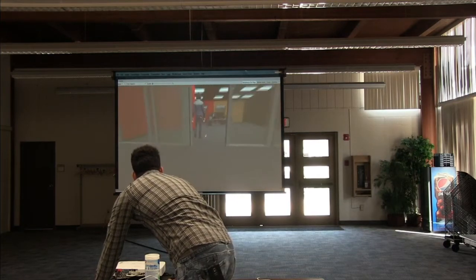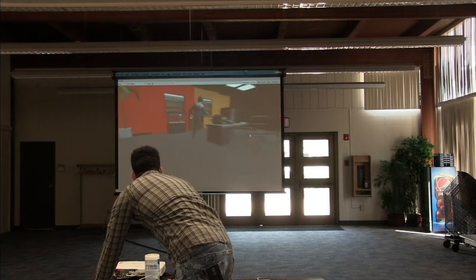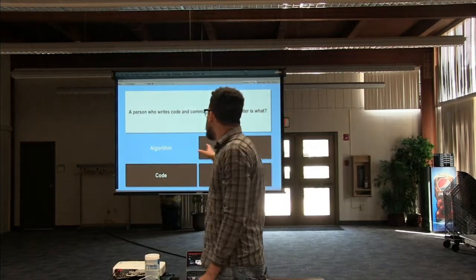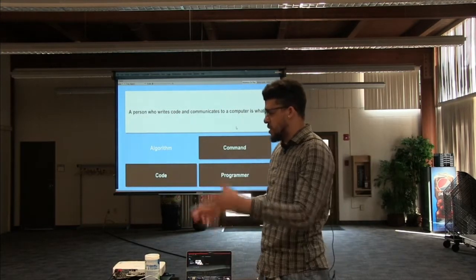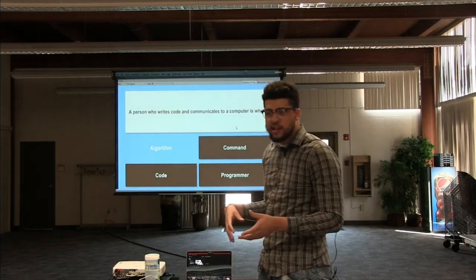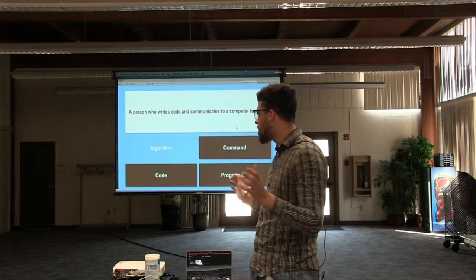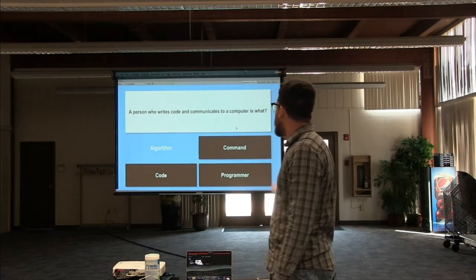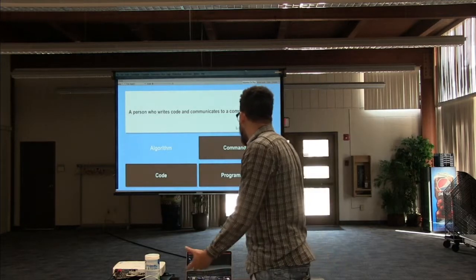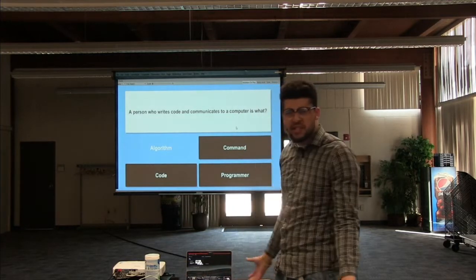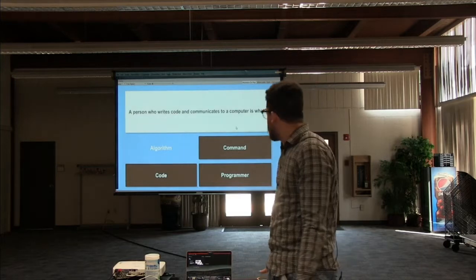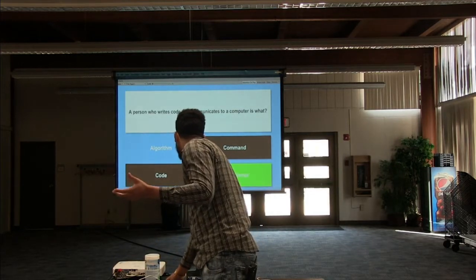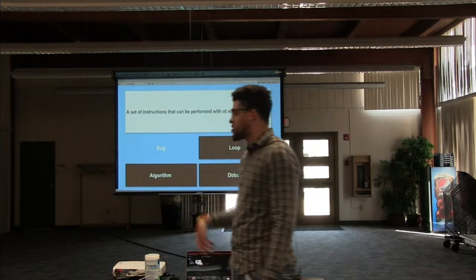Over here I walk up to my computer at my desk and something happens — the question interface pops up, kind of like a quiz template. All these questions appear — for example: 'A person who writes code and communicates to a computer is what?' You're a child looking through this: is it an algorithm, code, a command — or programmer? You just click the right answer and it turns green, keeping track of your score.